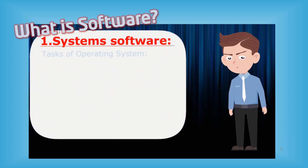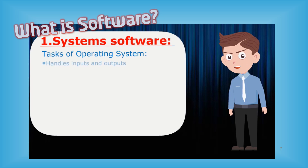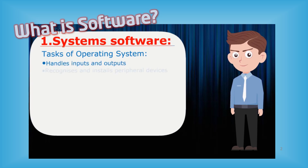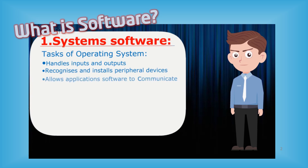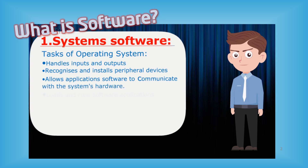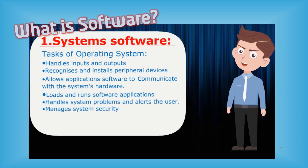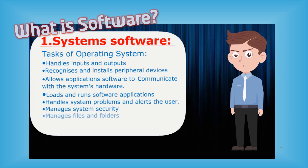Tasks of the operating system include: handles input and outputs, recognizes and installs peripheral devices, allows application software to communicate with the system's hardware, moves and runs software applications, handles system problems and alerts the user, manages system security, manages files and folders, moves data to and from the hard disk, and shares system memory.